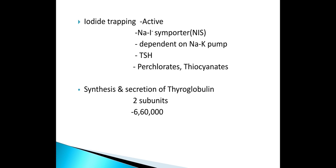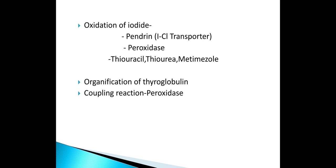Iodide trapping is an active process involving the sodium-iodide transporter. It is dependent on the sodium-potassium pump, and TSH also helps in iodide trapping. Drugs which inhibit this are perchlorates and thiocyanates. Synthesis and secretion of thyroglobulin: it has two subunits with a molecular weight of 660,000. Oxidation is mainly by thyroid peroxidase. The antithyroid drugs are propylthiouracil and thionamide/methimazole. It is dependent on the iodine chloride transporter called pendrin.